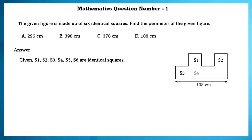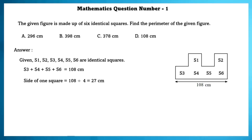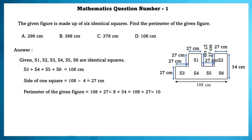Given S1, S2, S3, S4, S5, and S6 are identical squares. We imagine the corresponding order in which these squares are placed in the figure. Now S3 plus S4 plus S5 plus S6 is equal to 108 cm. Using this, we can find the side of 1 square, that is 27 cm. The perimeter of the given figure is equal to 378 cm.